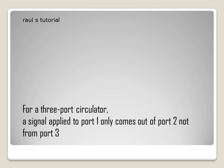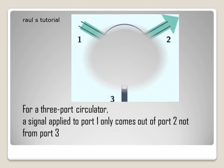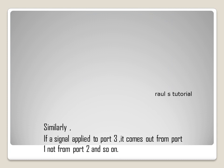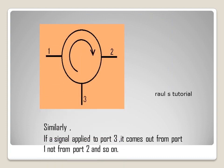For a 3 port circulator, a signal applied to port 1 only comes out of port 2, not from port 3. Similarly, if a signal is applied to port 3, it comes out from port 1, not from port 2, and so on.